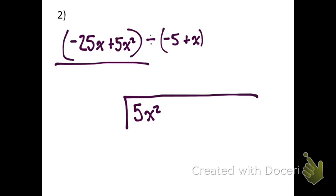The next descending order is x to the first, which would be this term here, negative 25x. And we could also put a placeholder for a constant here. I would recommend doing that anyways, just so it's there. You could add zero to anything; it won't add anything or subtract anything.